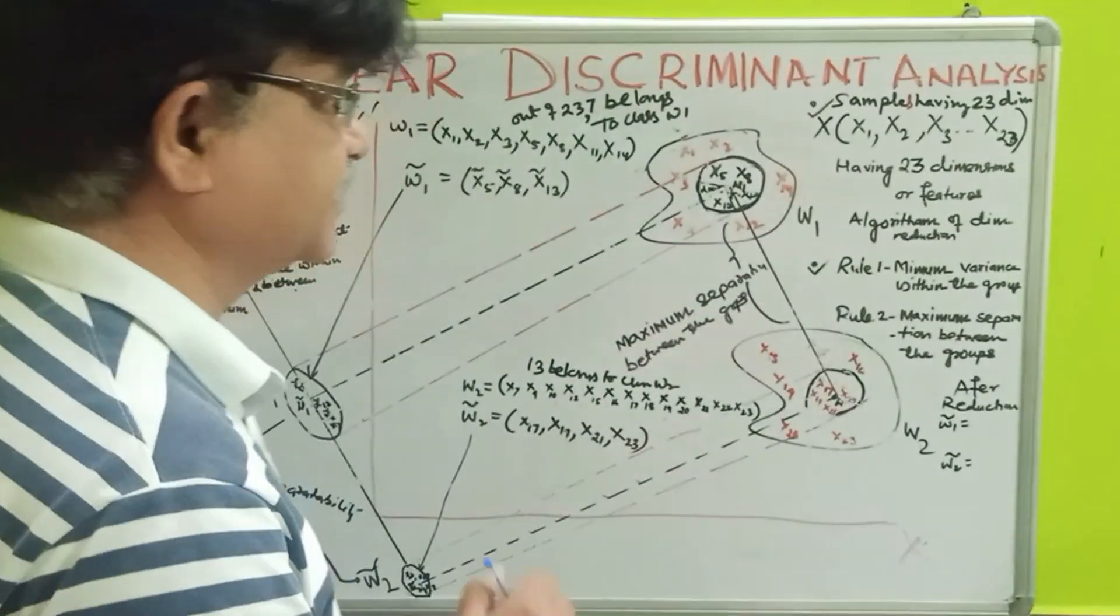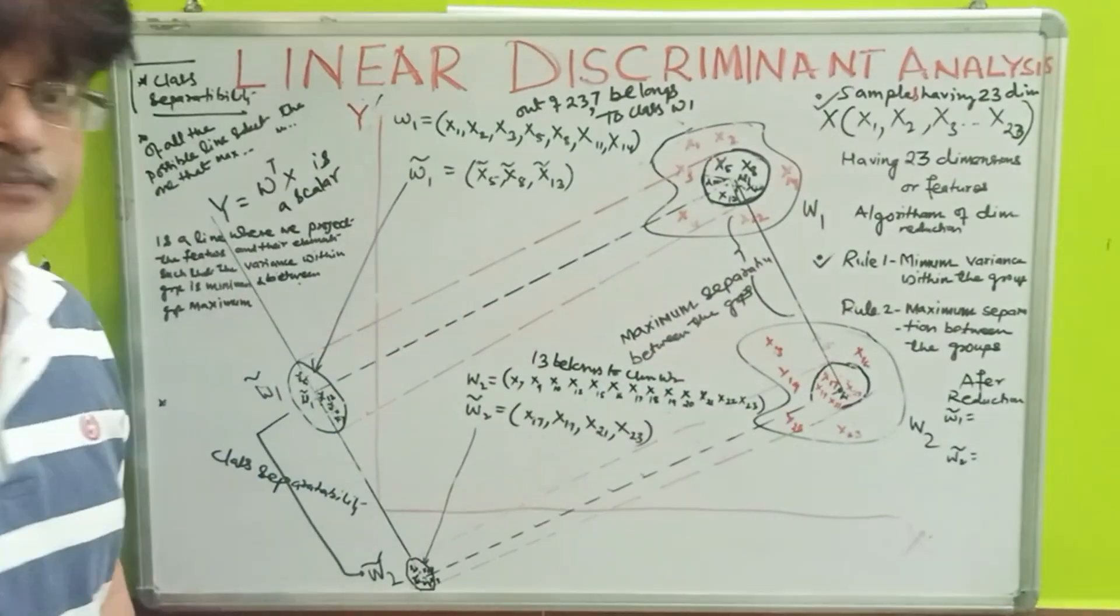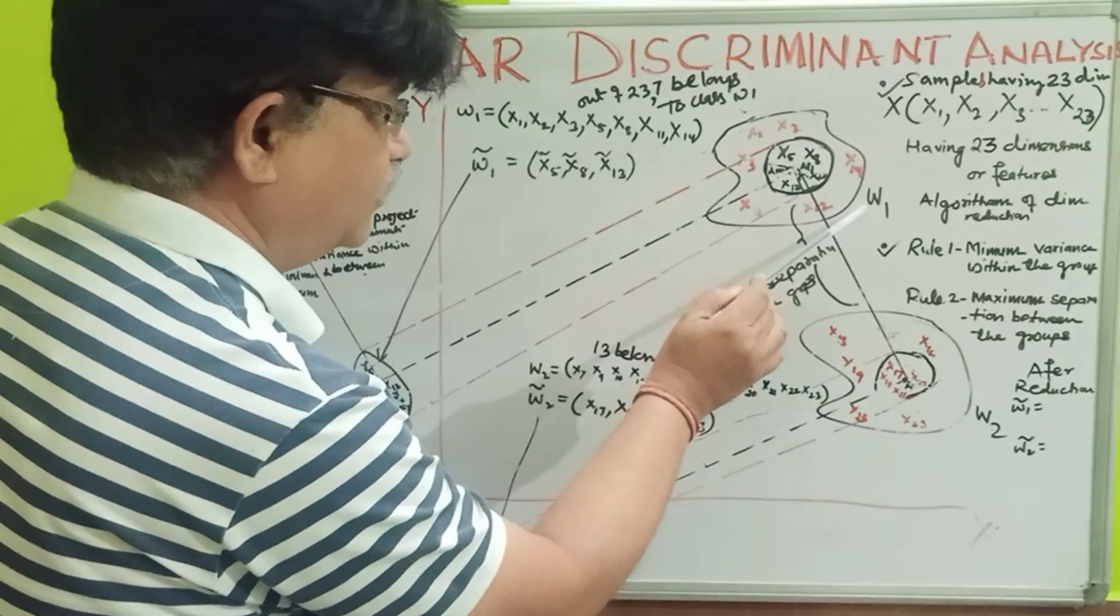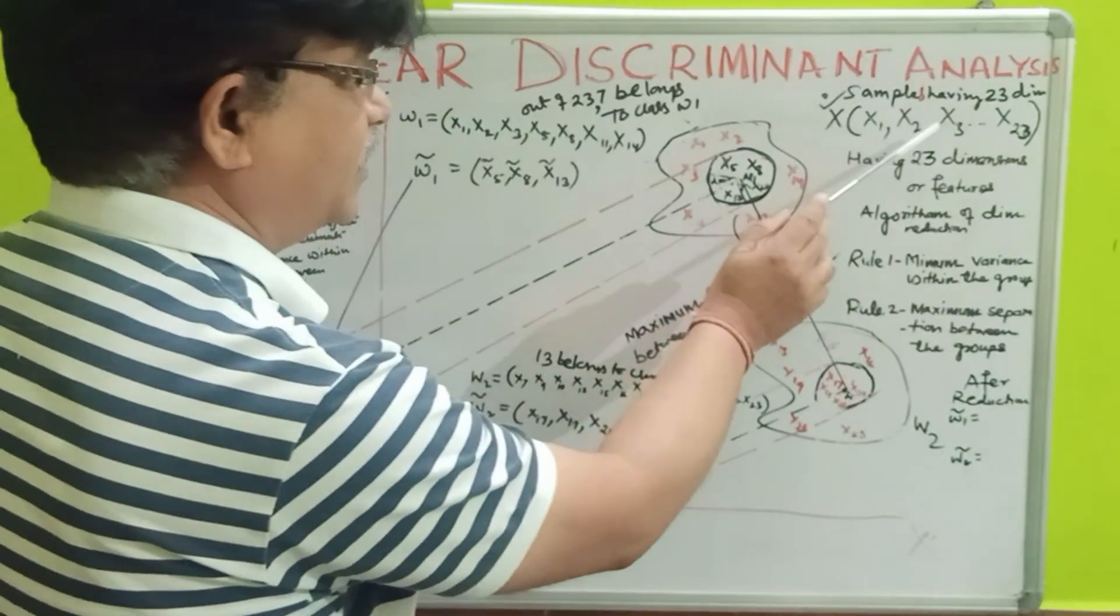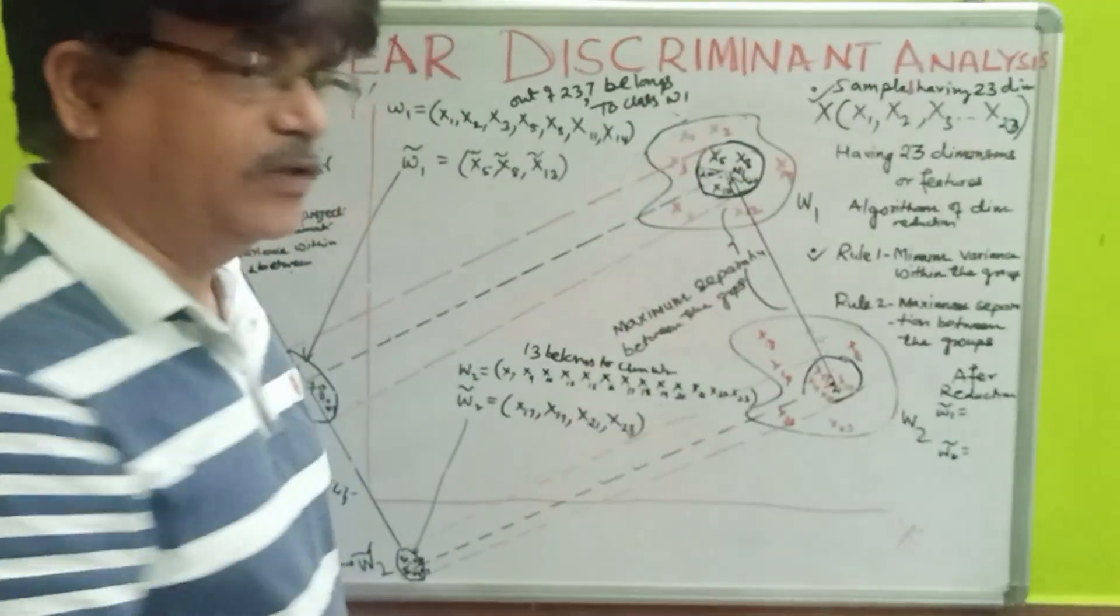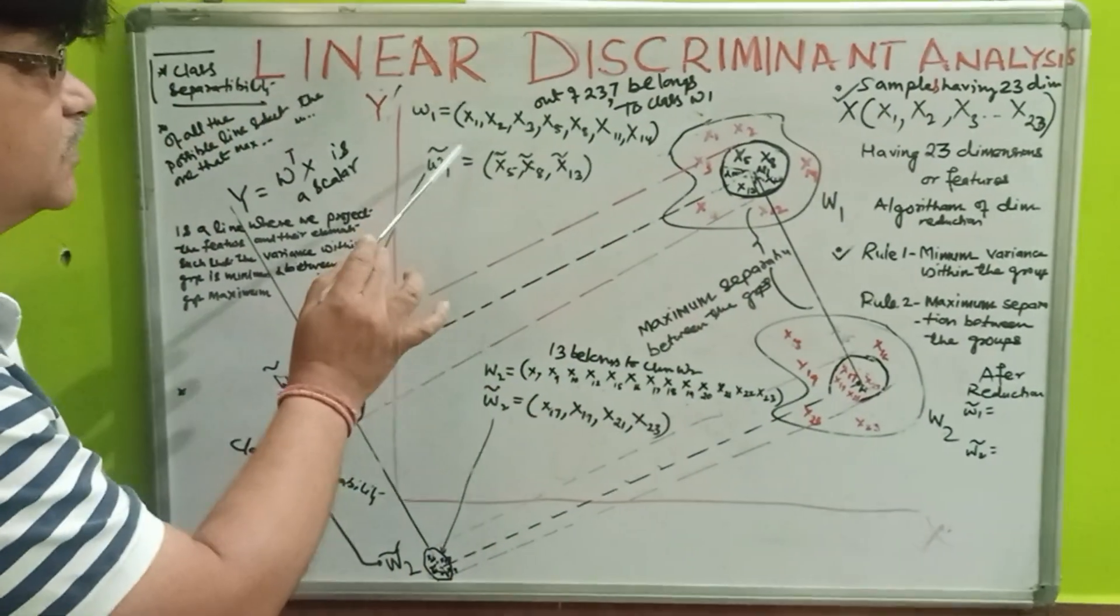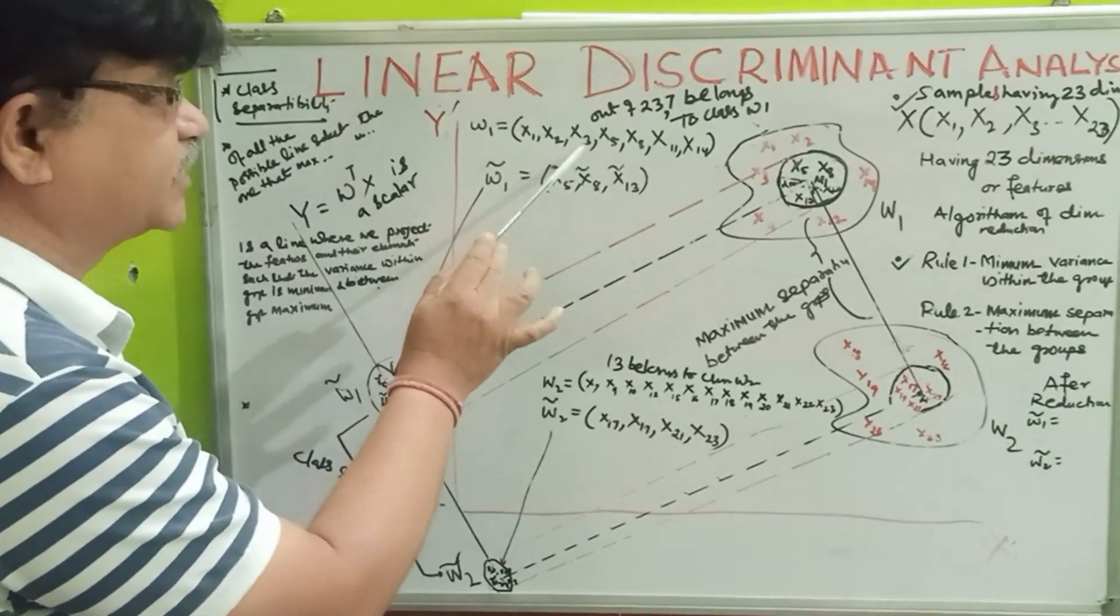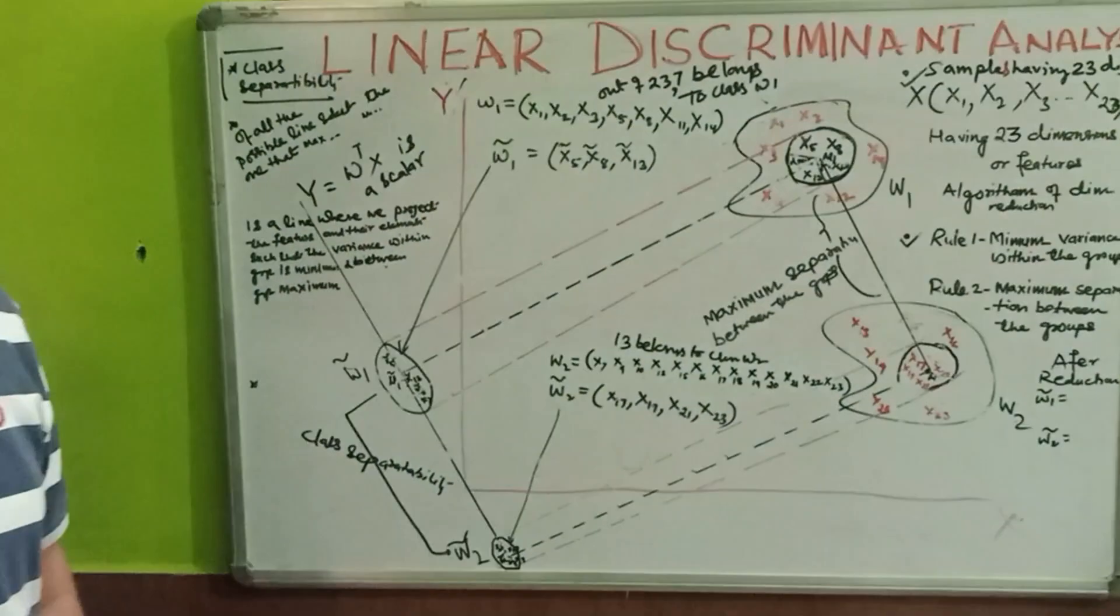So, for it, let us say, these data represent two set of rules. Let us say, this group is W1, and this is W2, out of these samples X1, X2, X3, so on, to X23. This W1 group contains X1, X2, X3, X5, X8, X11, X14.